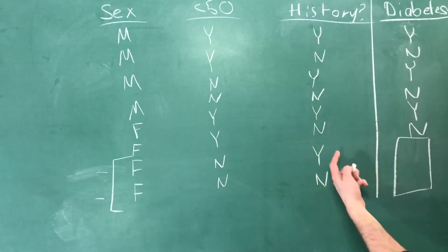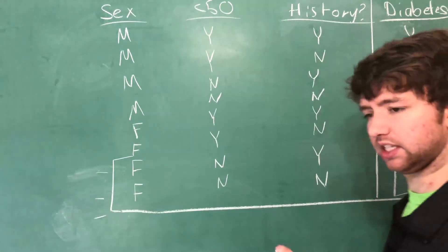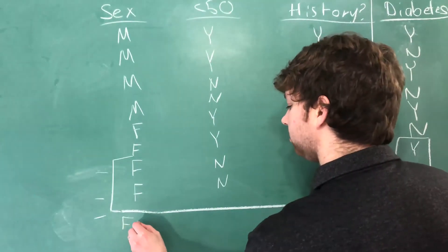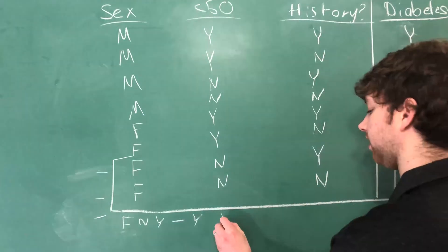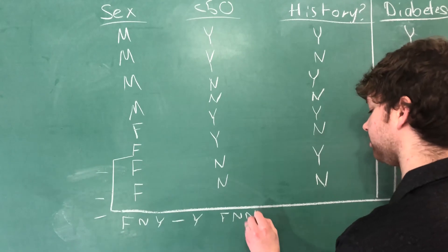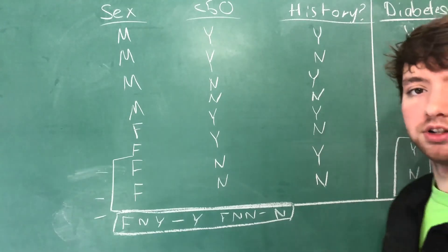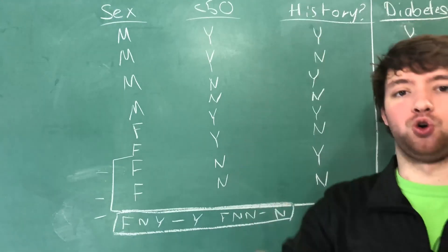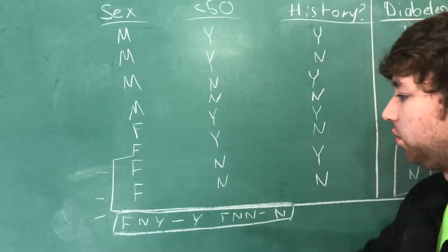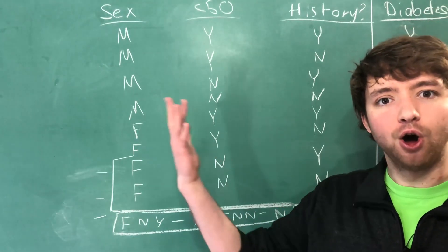So following this pattern here, this person does have a family history, so yes. And this one would be no. A female who's not under 50 and does not have a family history would not have diabetes. This here is the missing piece allowing us to completely model reality, even though we don't have enough data to do so. And that's the beauty of it all. We can know what's going to happen even though it hasn't happened yet. It's crazy.